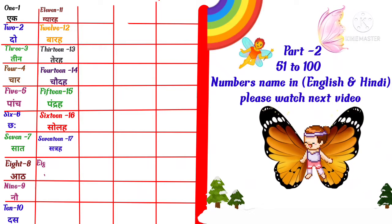E-I-G-H-T-E-E-N, 18 means eighteen. N-I-N-E-T-E-E-N, 19 means nineteen.